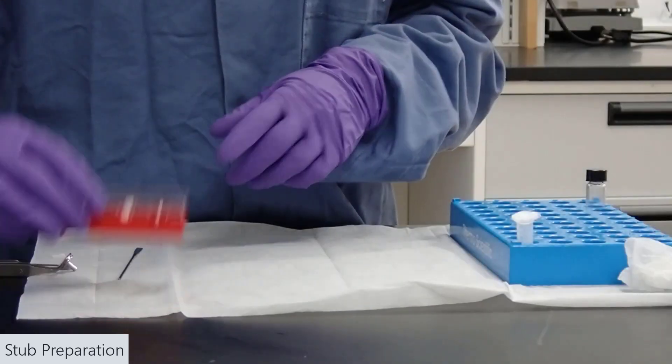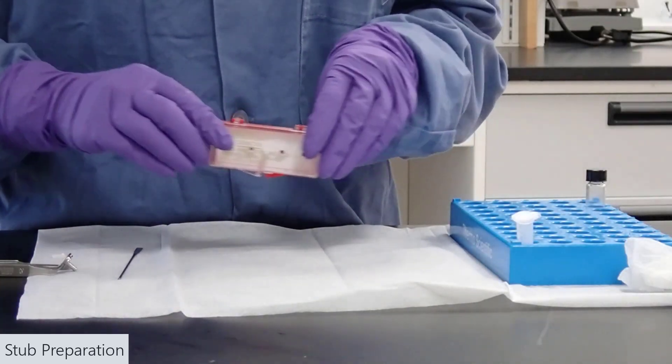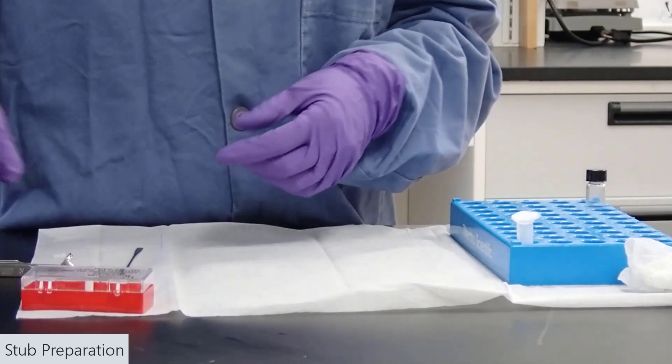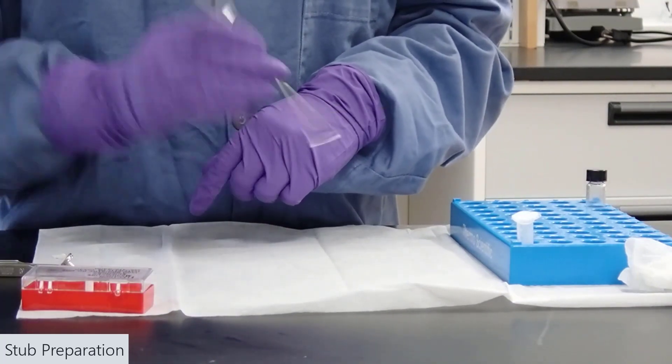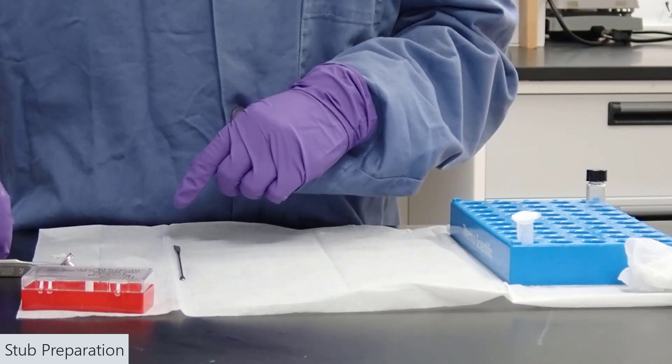So, to start, let's gather the supplies we'll need. A stub holder box is helpful to store our sample in. A little scoop—this one's metal. You could also use a wooden toothpick.